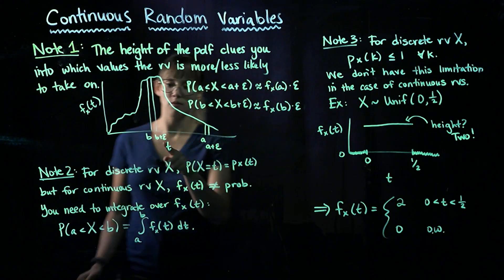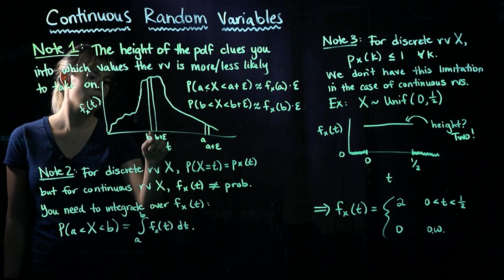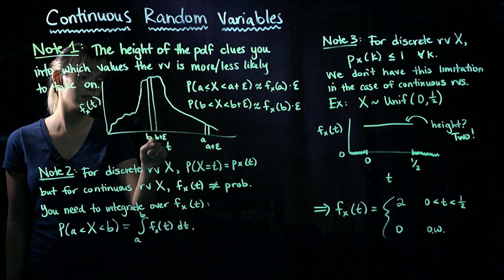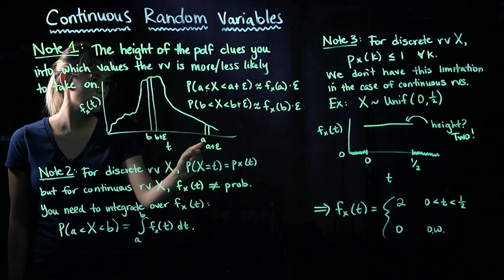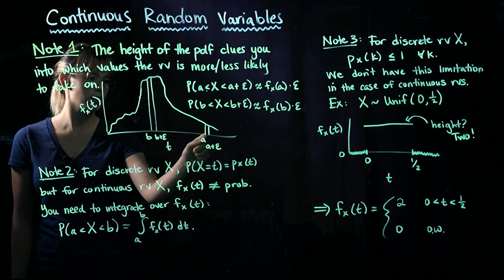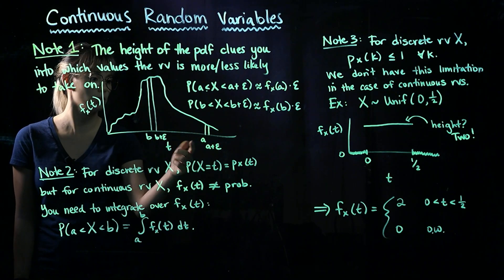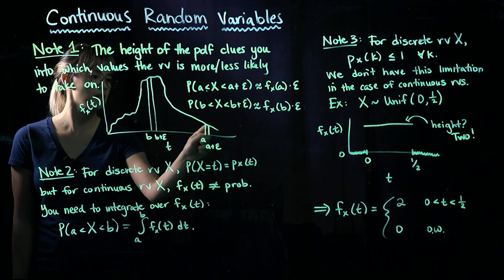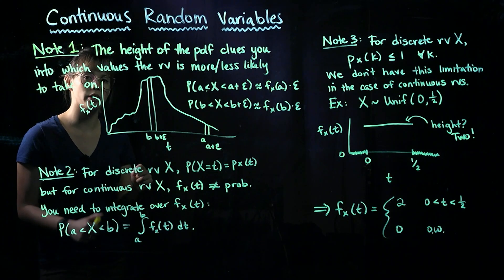So if we look at this value labeled B, the random variable is going to be likely to take on values pretty close to B. And then if we look at this value A, the random variable is less likely to take on values near A than near B. And we'll know that because the height of the PDF at A is much shorter than the height of the PDF at B.